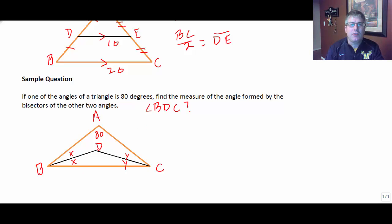Knowing that the sum of the interior angles of the triangle is 180, we know that triangle ABC is made up of 2X plus 2Y. 2X would be big angle B, and 2Y would be big angle C, plus 80, it has to equal 180 degrees.